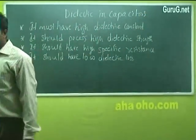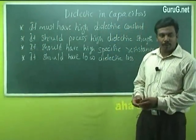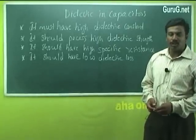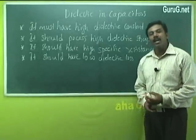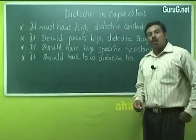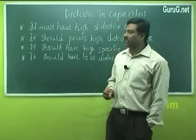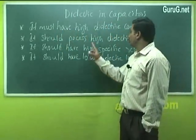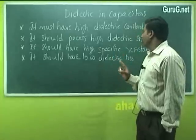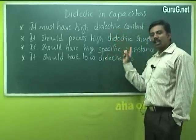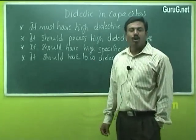Applications of dielectrics: dielectrics are mainly used in capacitors, as insulating material in transformers, and for industrial heating purposes. For use in a capacitor, a dielectric material must have high dielectric constant, high dielectric strength, high specific resistance, and low dielectric loss. If all these properties are satisfied, the dielectric material can be used in capacitors for storing charges.